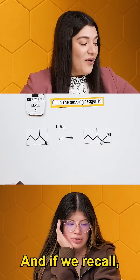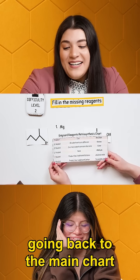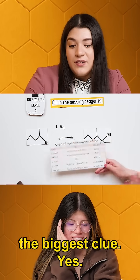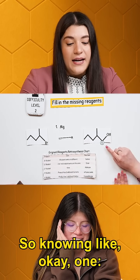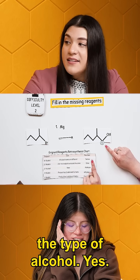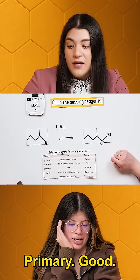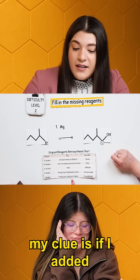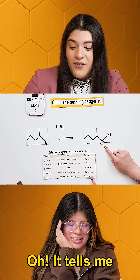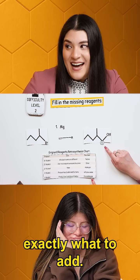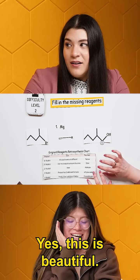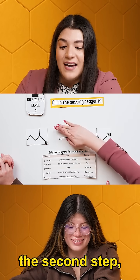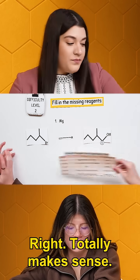If we recall, going back to the main chart that we saw in the community video, this is going to be the biggest clue. So knowing, okay, I need to classify the type of alcohol — so what would this be? Primary. I go to primary. Next I see, okay, my clue is if I added how many additional carbons? One. Oh, it tells me exactly what to add. This is like the holy grail — this is beautiful. So now I know the second step, because I need a carbonyl, is formaldehyde. Right, totally makes sense.